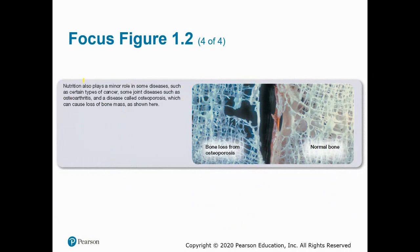This is another example of nutrition having a direct relationship to disease, though not the only cause. What's shown here is osteoporosis — significant bone loss due to lack of vitamin D and calcium, the two major contributing nutrients. Nutrition plays a role, though it's not the sole cause. Other diseases with a strong nutritional component include cancer, joint diseases like osteoarthritis, and osteoporosis.